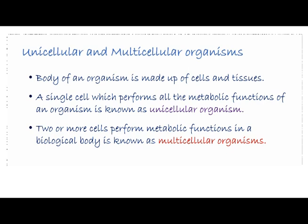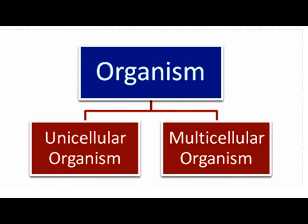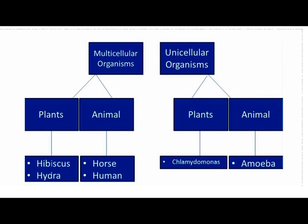Multicellular organisms have tissues, organs, and systems in their body to perform functions. Here is the flowchart of organisms categorized based on their organizational levels as unicellular and multicellular. Multicellular organisms may be a plant or an animal, and unicellular organisms may also be a plant or an animal.